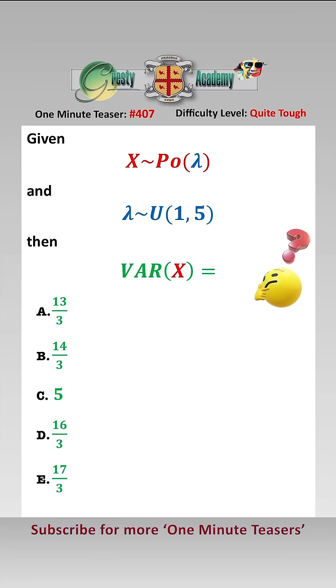The parameter of x, a random variable, is itself a random variable, so we will use the law of total variance, which says that Var(X) equals E[Var(X|λ)] plus Var(E[X|λ]).